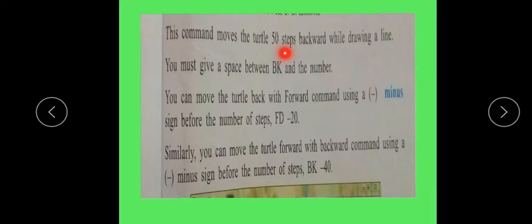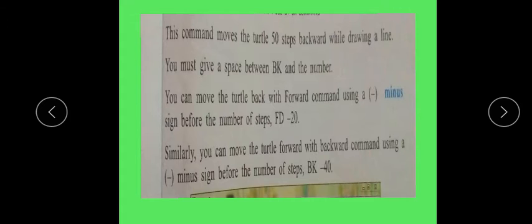This command moves the turtle 50 steps backward while drawing a line — jaise forward kiya tha waise hi backward 50 steps line draw karte hue waapas aayega. You must give a space between BK and the number. You can also move the turtle back with the forward command by using a minus sign before the number of steps.